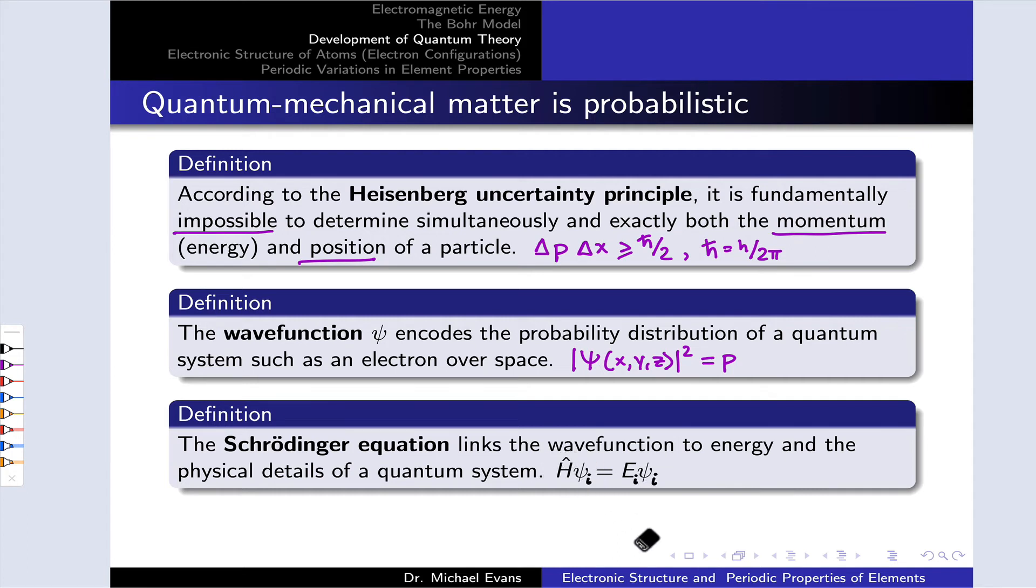So this H-bar operator, which we call the Hamiltonian, performs some mathematical operation on psi. If psi, this wave function, is a solution of this equation, the result will be a constant value E times the original wave function. This is known as an eigenvalue equation, and it's solved using strategies from linear algebra.